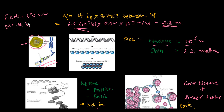So you can calculate the number of base pairs present in the total length of DNA — the space between base pairs is known, and from the total size you can find the number of base pairs. Now we are going to focus on the organization of the DNA and how it will be packed inside the nucleus.